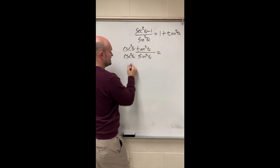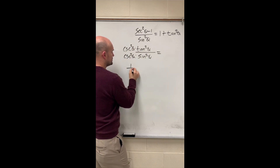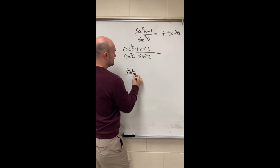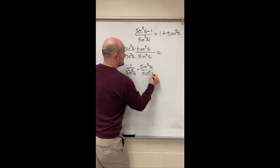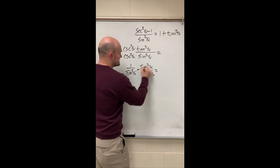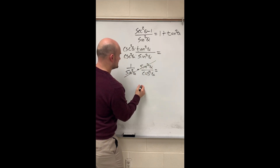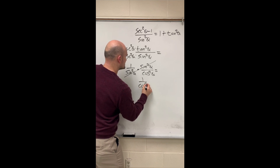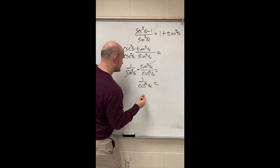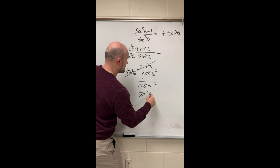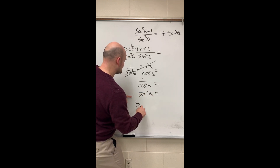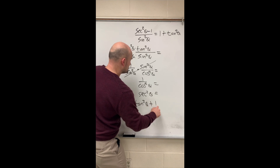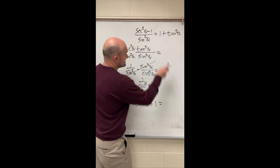So I'll rewrite cosecant squared as 1 over sine squared and tangent squared as sine squared of theta over cosine squared of theta. Now you can see the sine squareds are going to divide out, leaving me with 1 over cosine squared of theta, which I can rewrite as secant squared of theta. Using my Pythagorean identities again, I can rewrite that as tangent squared of theta plus one, which matches the right side.